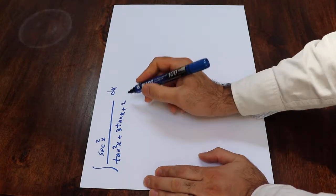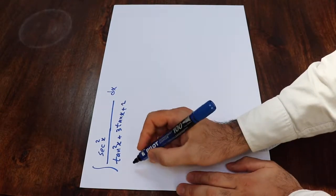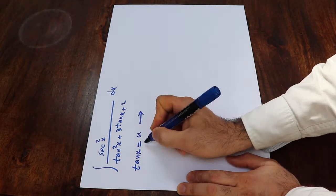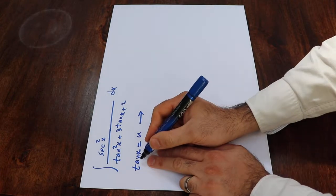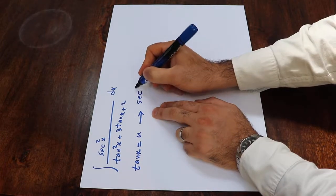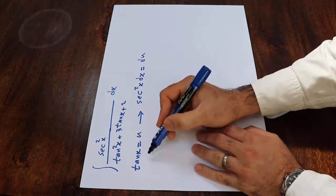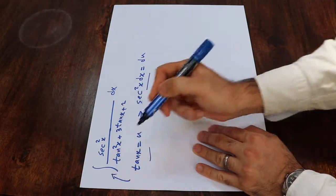To solve this integral, you have to use the substitution rule. If you define tangent x as u, and if you take the derivative from each side of this equation, derivative of tangent x is secant square x, so dx will be equal to du. So here you need to substitute these two expressions into this integral.